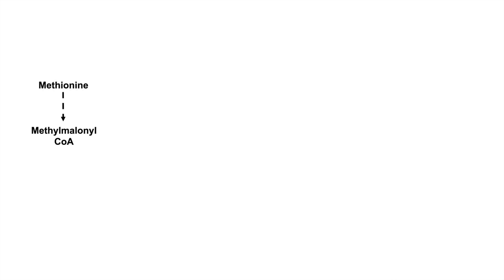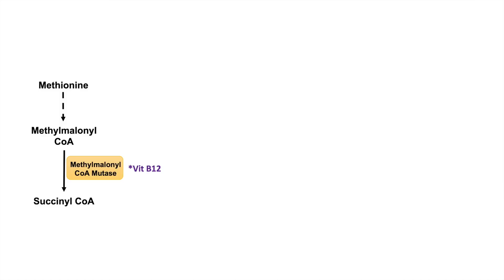Vitamin B12 is required for two specific and very important enzymes within our body. When we ingest the amino acid methionine, methionine gets converted to methylmalonyl-CoA. Methylmalonyl-CoA gets acted on by the enzyme methylmalonyl-CoA mutase, which requires vitamin B12. This enzyme converts methylmalonyl-CoA to succinyl-CoA. Without vitamin B12, there is no activation or action of this enzyme, so methylmalonyl-CoA backs up and increases in concentration, then gets converted to methylmalonic acid.